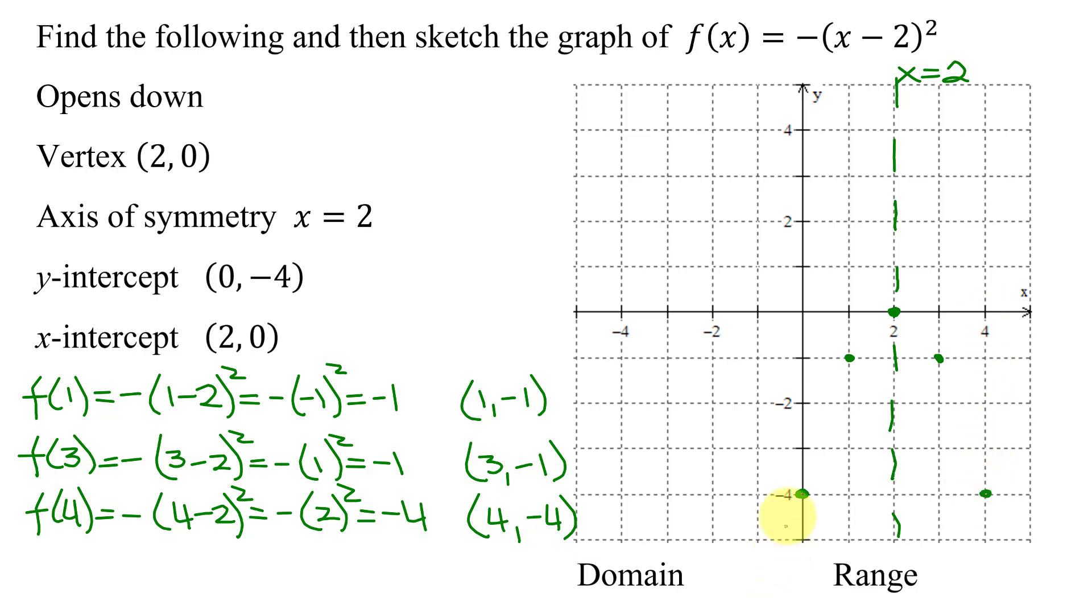Now, does that look like a parabola that opens down? Yes. Does my arithmetic check? This point is a reflection of this one across the axis of symmetry, and so does this one.